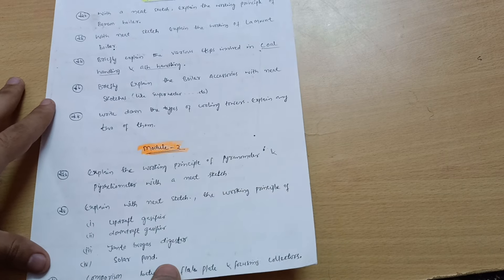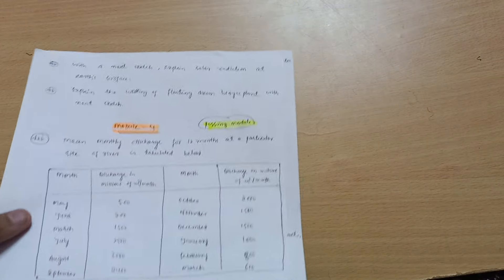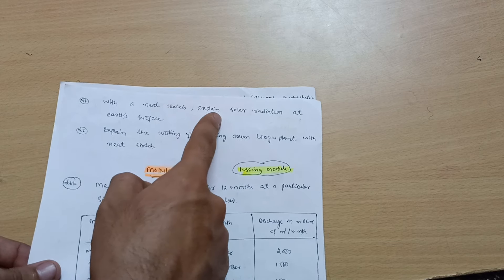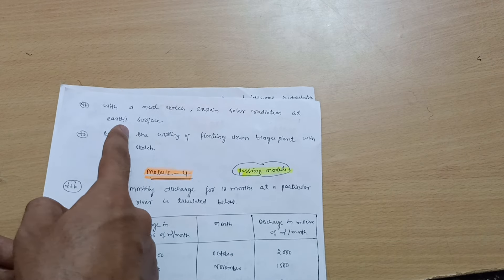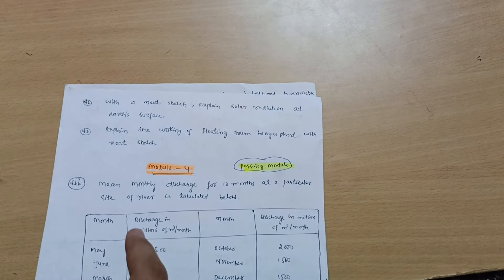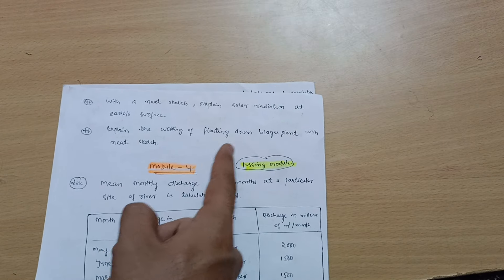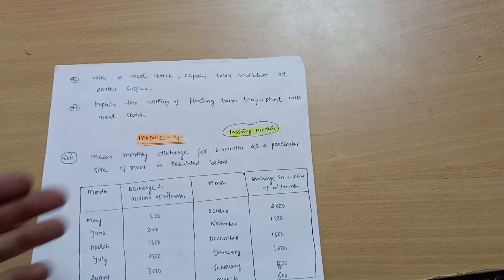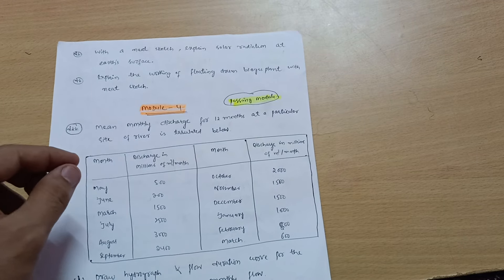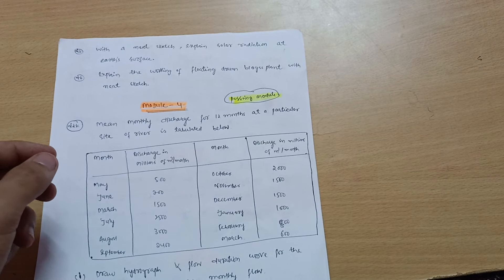Next is a comparison between flat plate and focusing collectors. This much is Module 2 and two questions again here. With neat sketch expand solar radiation at earth surface. Expand the working of floating drum biogas plant with neat sketch.